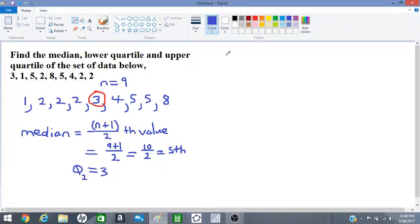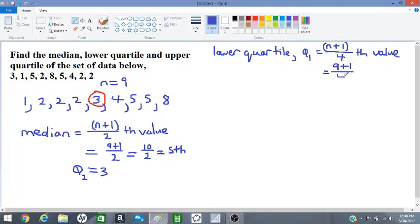Let's move on to the lower quartile, also known as Q₁, which equals the (n+1)/4 value. n is 9, so we have (9+1)/4, which is 10/4, which is 2.5.